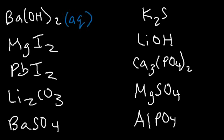However, lead iodide — lead is an exception with iodide. Iodide is generally soluble and lead is the exception, so lead iodide is insoluble; this is going to be a solid. Lithium carbonate — looking at lithium, it's a group 1 metal. Group 1 metals are always soluble, so we're going to write AQ for soluble.